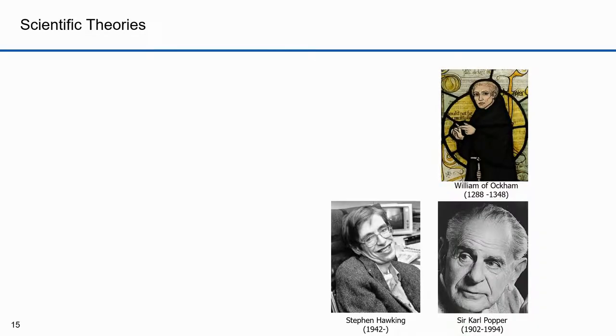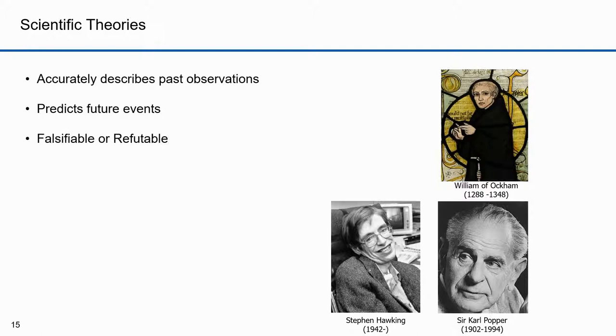Stephen Hawking, in A Brief History of Time, states, a theory is a good theory if it satisfies two requirements. It must accurately describe a large class of observations on the basis of a model that contains only a few arbitrary elements and it must make definite predictions about the results of future observations. He goes on to state, Any physical theory is always provisional in the sense that it's only a hypothesis. You can never prove it. No matter how many times the results of experiments agree with some theory, you can never be sure that the next time the result will not contradict the theory. On the other hand, you can disprove a theory by finding even a single observation that disagrees with the predictions of the theory. The unprovable but falsifiable nature of theories is a necessary consequence of using inductive logic.